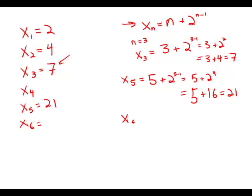We'll try this again for x sub 6. x sub 6 should equal 6 plus 2 to the 6 minus 1 equals 6 plus 2 to the 5th.